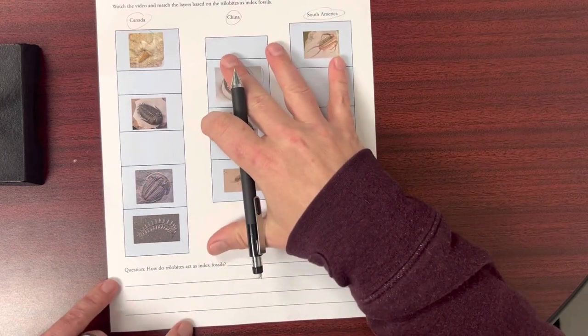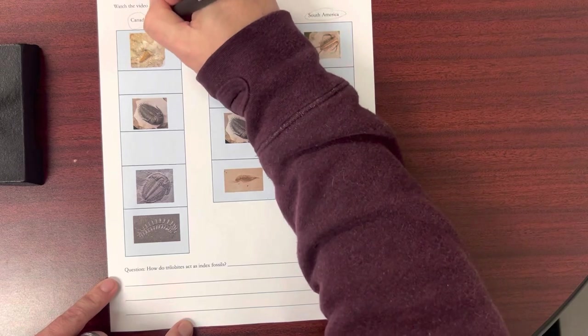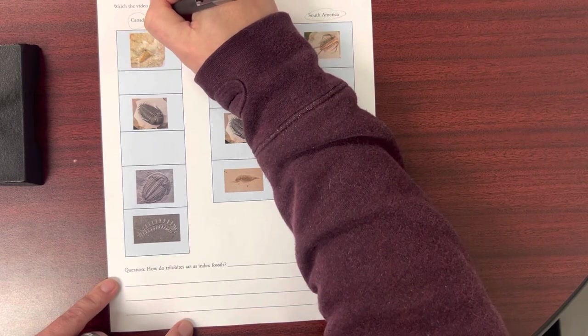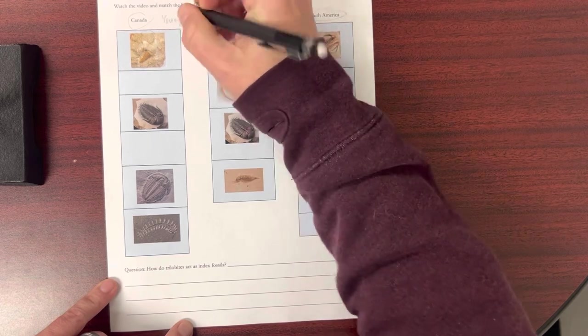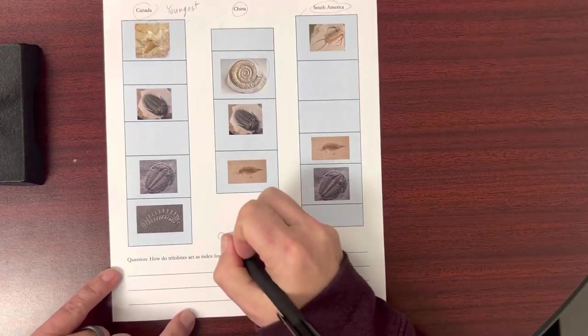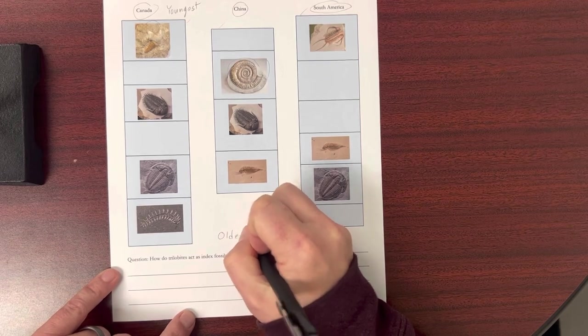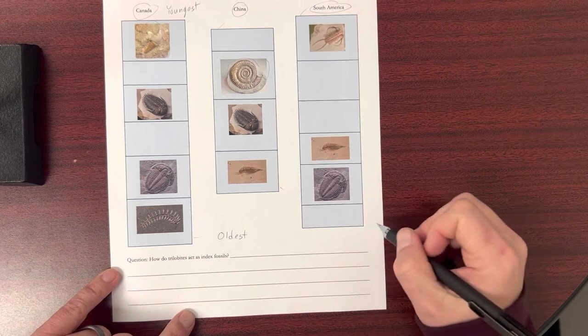So if you remember when we were talking about rock layers, for the most part, generally speaking, your youngest layers are on top, right? Here, here, here, and your oldest layers are on the bottom. Oldest, oldest, oldest.